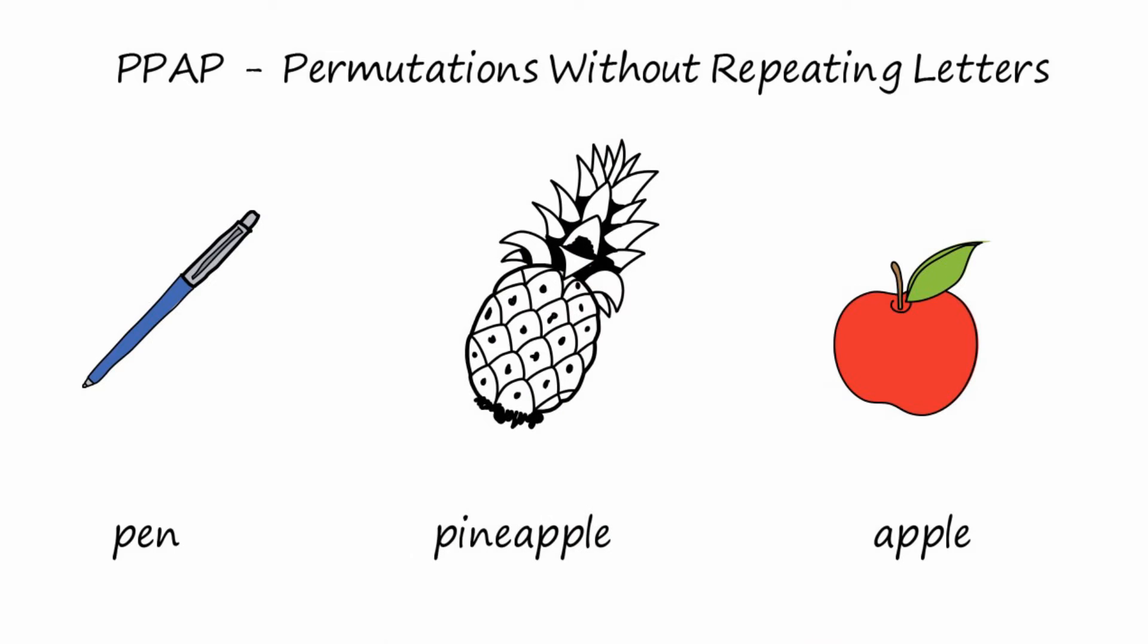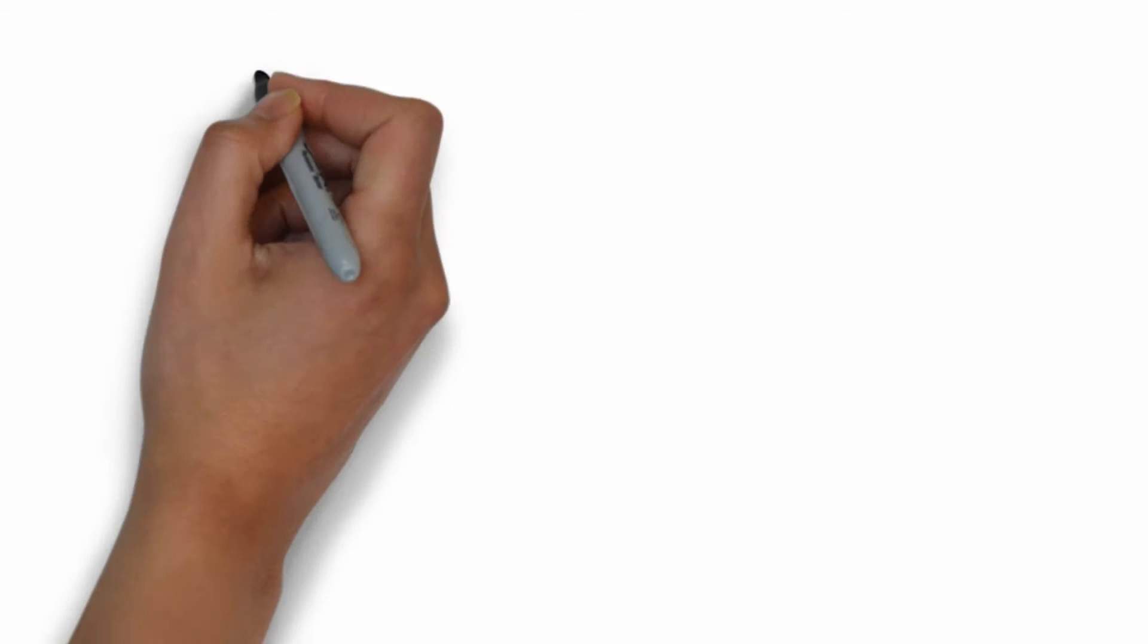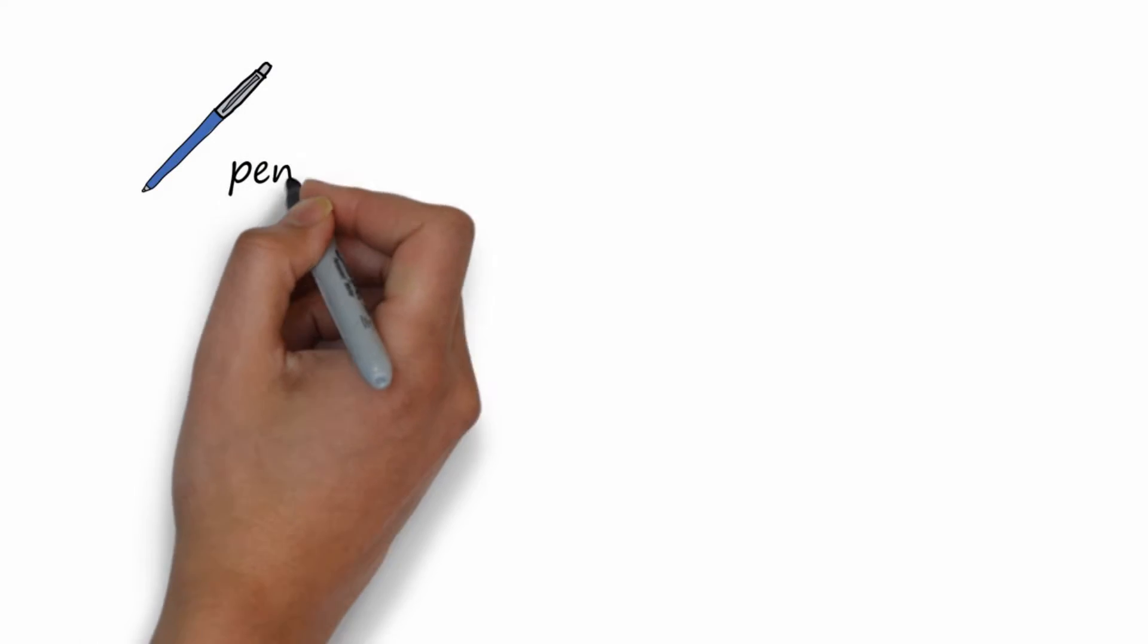Let's do a lesson on permutations without repeating letters. We'll start with an example, the word pen with three letters in it. How many ways can we make three-letter words using the letters in the word pen?